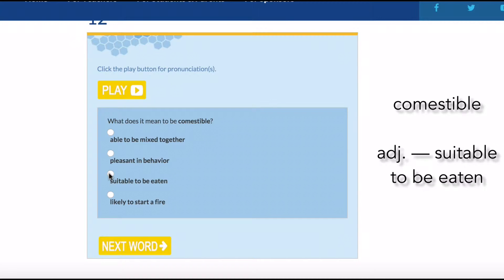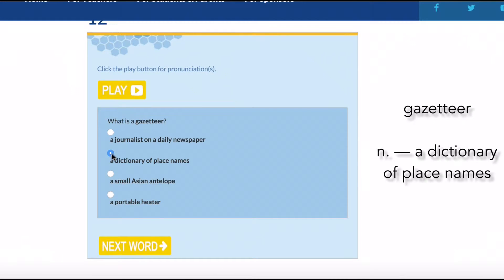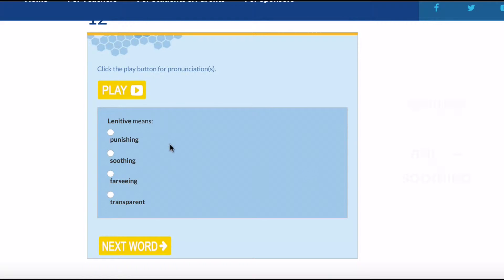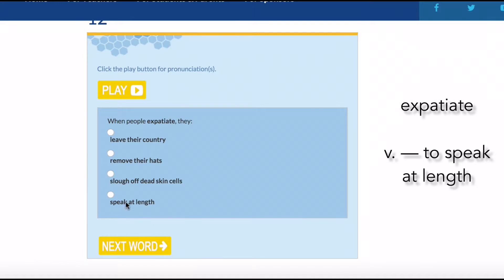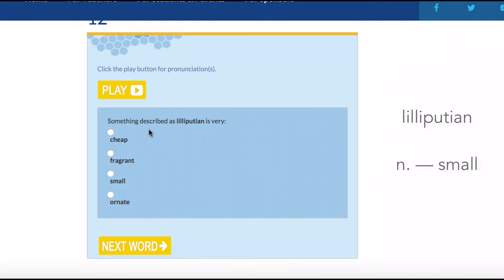Comestible means suitable to be eaten. A gazetteer is a dictionary of place names. Letative means soothing. When people expediate, they speak at length. Something described as Lilliputin is small.